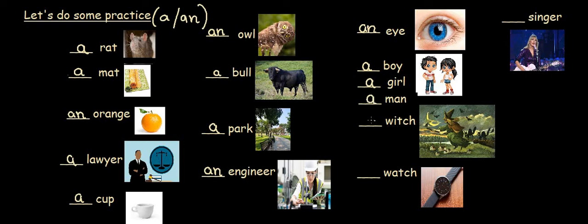Witch starts with the consonant w. Therefore, it's a witch. Watch starts with the consonant w. Therefore, it's a watch. Singer starts with the consonant s. Therefore, it's a singer.